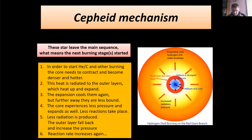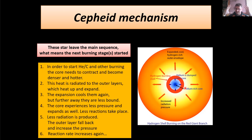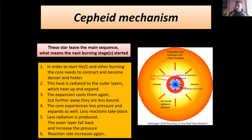This constant expansion and contraction of the core gives rise to Cepheid variable stars. Their luminosity varies periodically, making them useful as standard candles. The process goes faster for low-mass stars and more slowly for the larger, more inert ones.